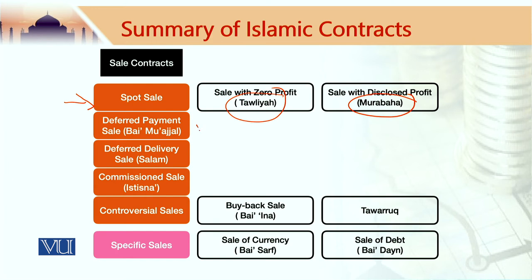We have deferred payment sale, also called bai muajjal; deferred delivery sale, which is called salam; and then we have a commission sale contract called istisna. There are some controversial sale contracts like baina and tawarruq. Baina has historically been used in countries like Malaysia but even there its use is going down very significantly. Tawarruq, on the other hand, is the most commonly used contract in Islamic banking and finance, although to many people it remains controversial.